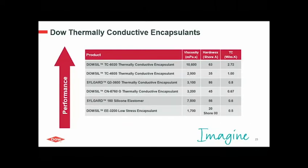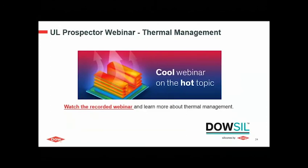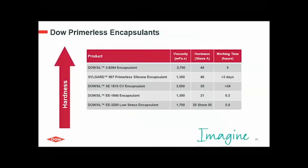For applications that need thermal conductivity, we can go for a thermally conductive encapsulant where the thermal conductivity can range from 0.5 W/m·K up to almost 3 W/m·K, also with different viscosities available. If you want to learn more about thermal management, we invite you to watch our recorded webinar on that hot topic. Primerless encapsulants are also a solution available to achieve a really weatherproof module, with different viscosity and hardness options. This is an optional feature where strong adhesion to the substrate is needed for very harsh environment conditions.